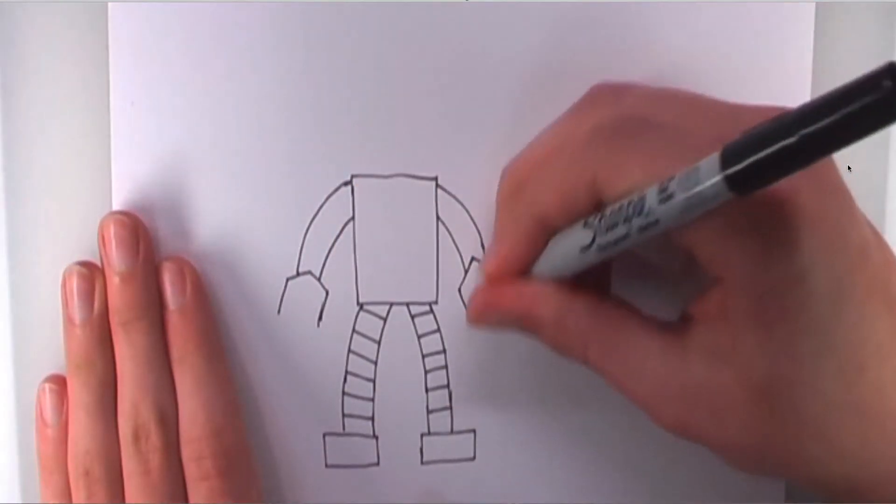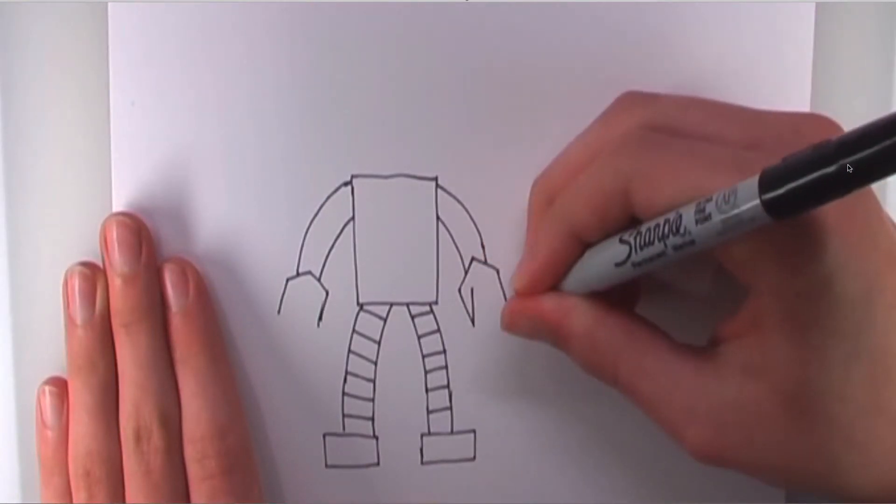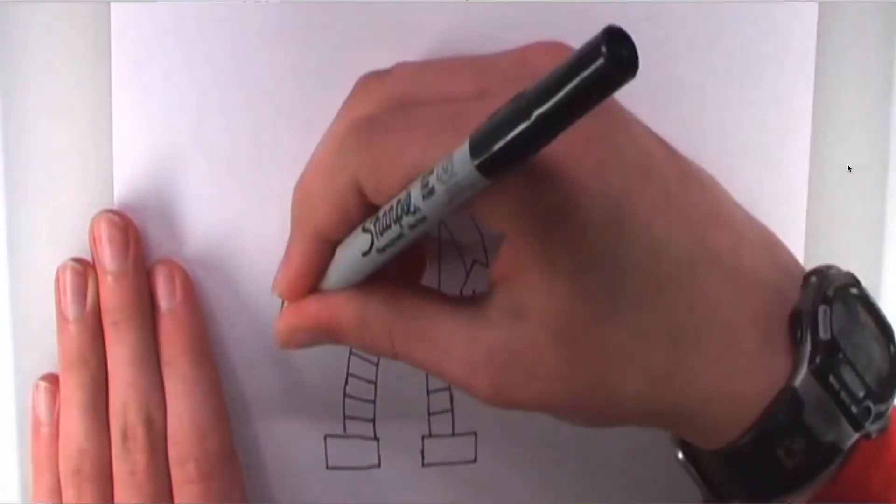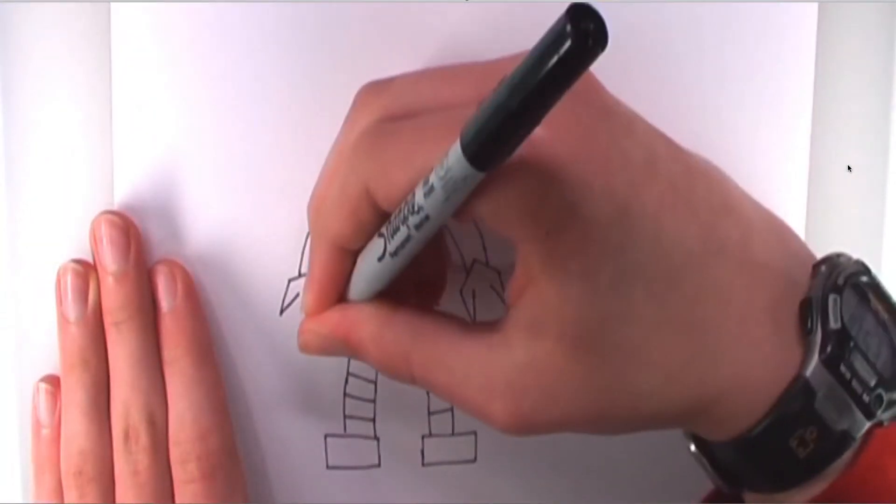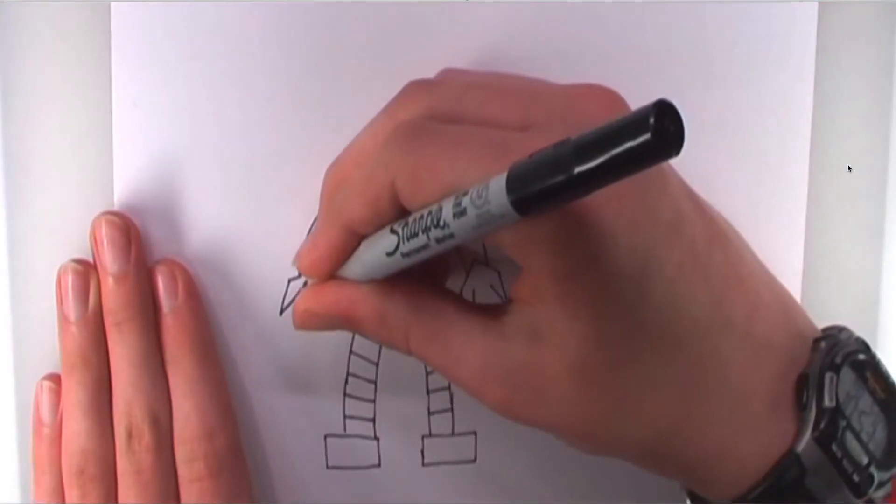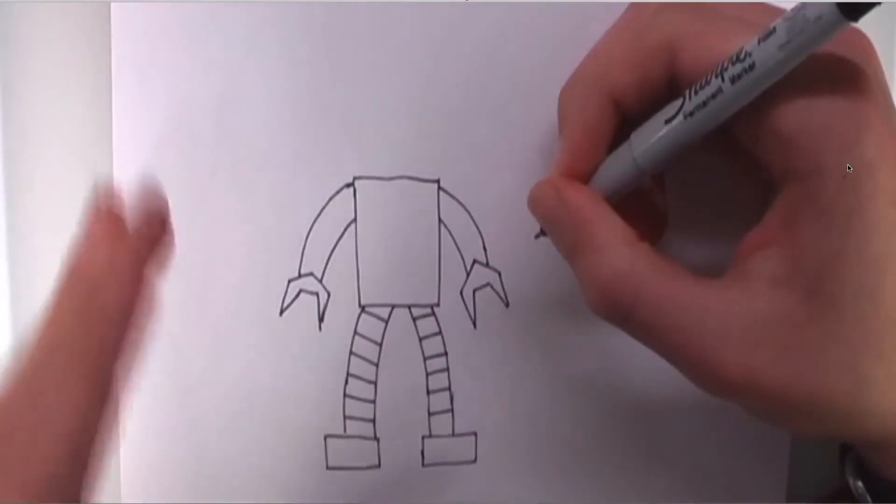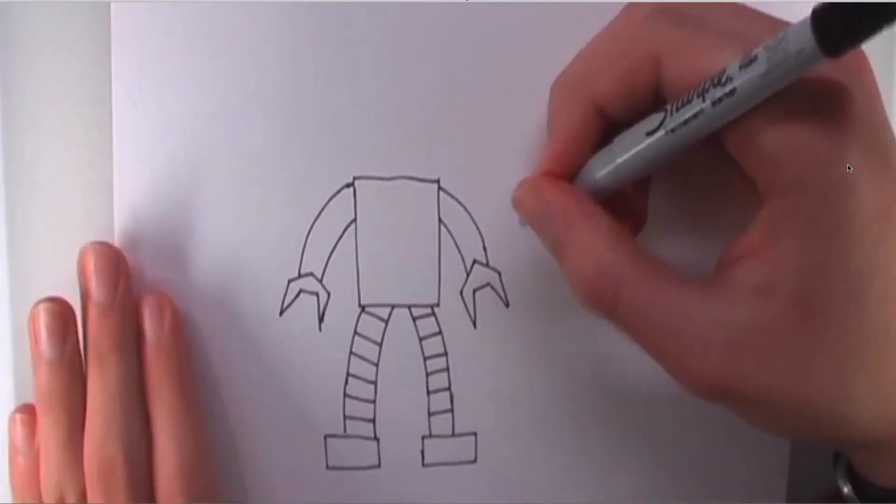Now, you want a nice angle on this. You want another line coming inward on both sides. So, that's going to be a point. It's a little hard to explain, but I'll do my best. And then, those lines, we're going to connect with one line. So, it's going to make a clappy claw.